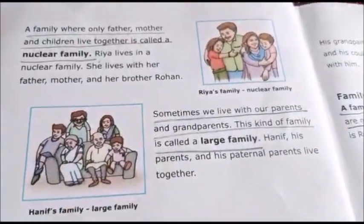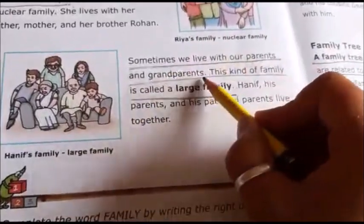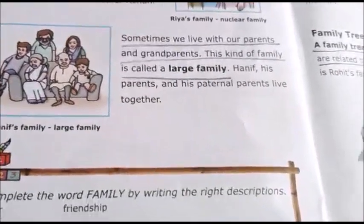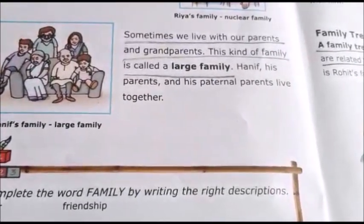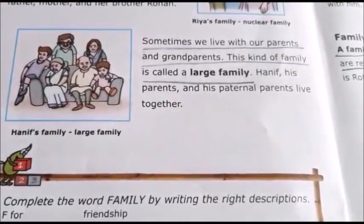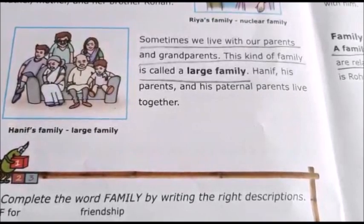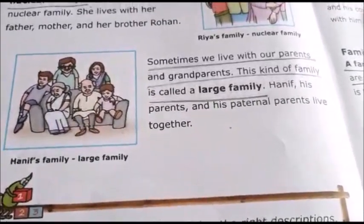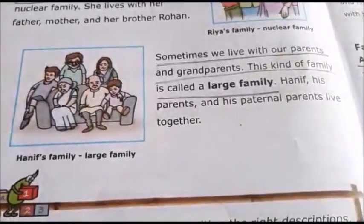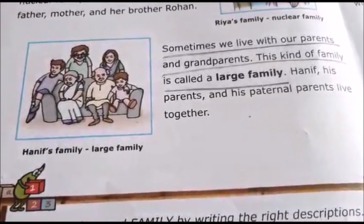Next comes large family. Sometimes we live with our parents and grandparents — this kind of family is called a large family. In a large family, more than four members live together. As you can see in the picture, Hanif, his parents and his grandparents live together.